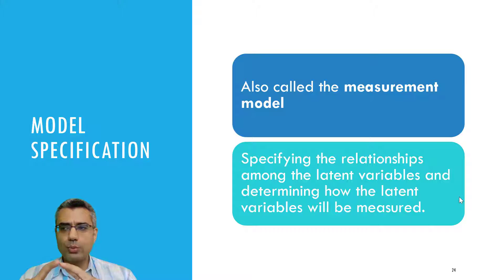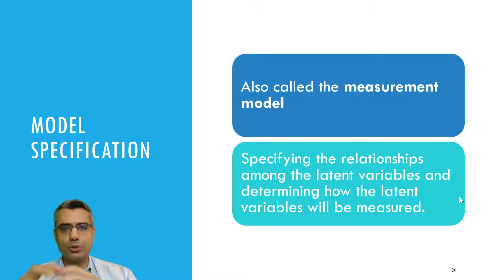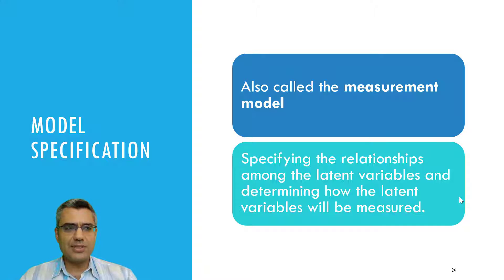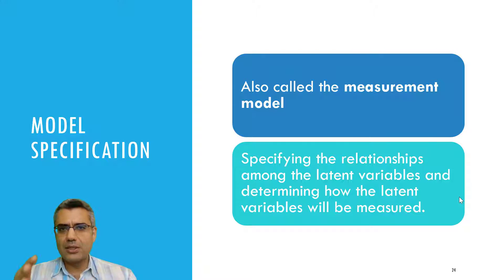By model specification, I mean how you need to decide how to measure the constructs and variables — this is about the measurement model assessment. For example, you need some instruments. If you want to measure customer satisfaction, there may be different options available, so which one do you want to choose?